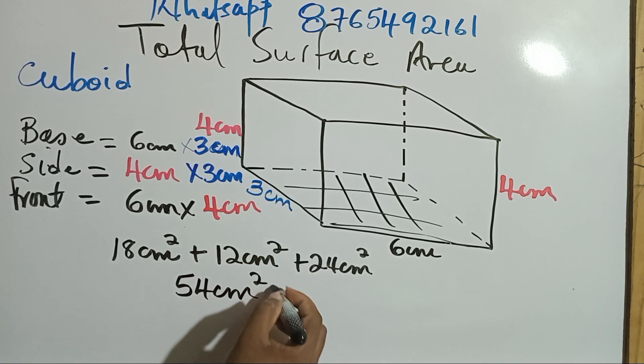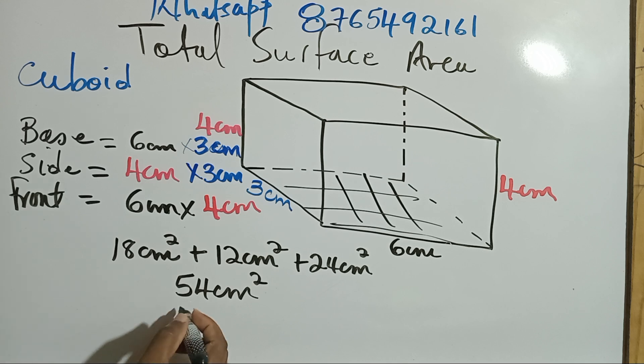But, as we said earlier, this represents three sides. But it has six sides. And the opposite sides are equal. So what we can do, add 54 again. Because the other three would have the same area.